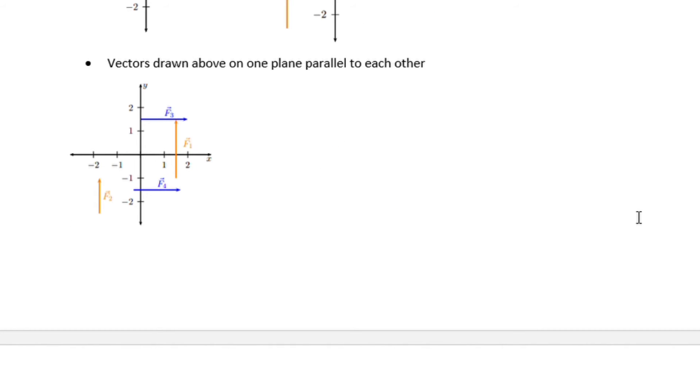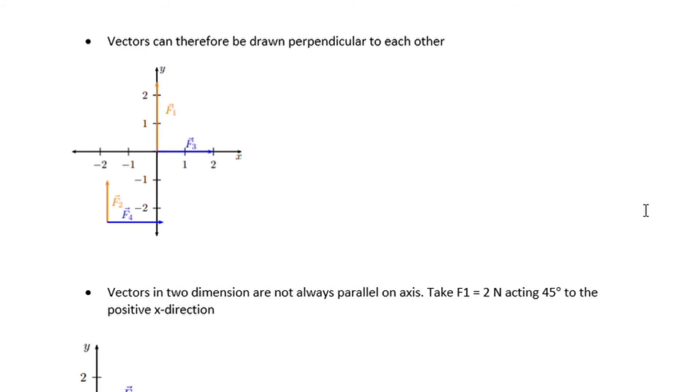We just drew our vectors, 2 newtons facing the positive x side and 2.5 facing the y positive side. This can be drawn on the same Cartesian plane which will be parallel to each other. Vectors can therefore be perpendicular to each other as well, whereby the tails are touching.